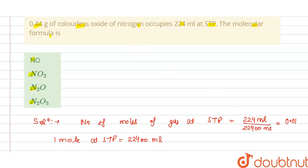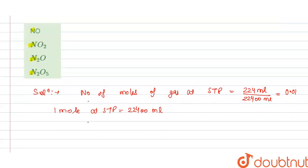So these are the number of moles of gas at standard temperature pressure and we have the 0.01 mole of gas weighs 0.44 gram.